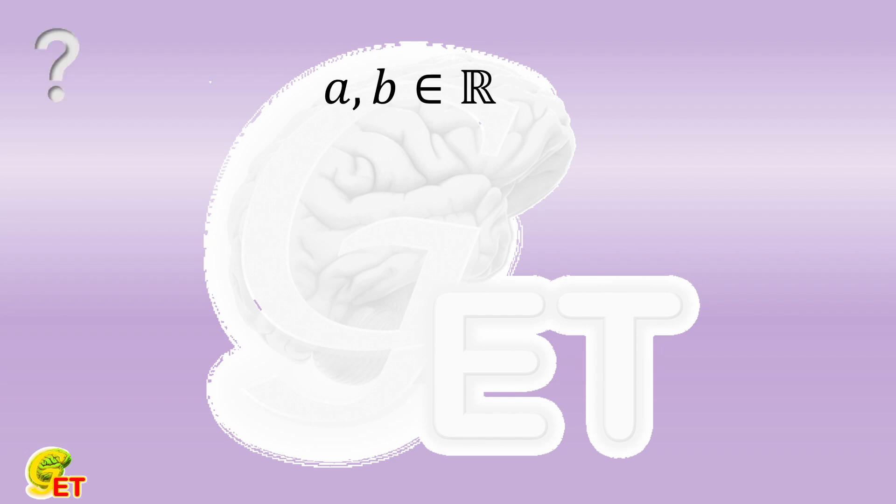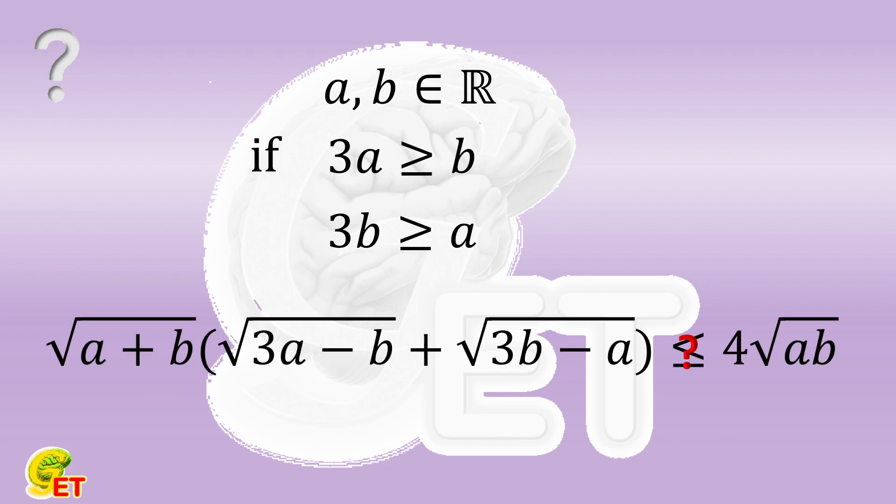A and B are both real numbers. 3 times A is not smaller than B, and 3 times B is not smaller than A. Then, can you prove the following inequality? Why not give a try, and we will come back soon.